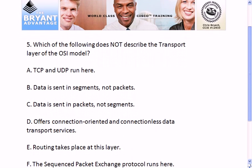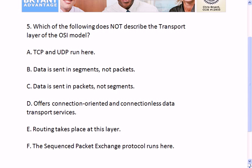Taking a look at question five, one of the dreaded 'not' questions. Going from top to bottom, C is the first one that doesn't describe the transport layer, because data is indeed sent in segments and not packets. Also, routing does not take place at the transport layer. The Novell SPX protocol, F, does actually run at the transport layer.